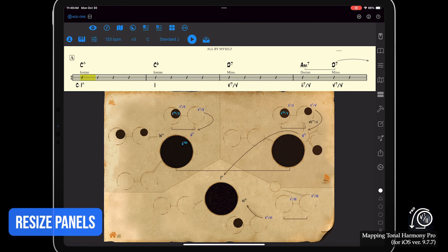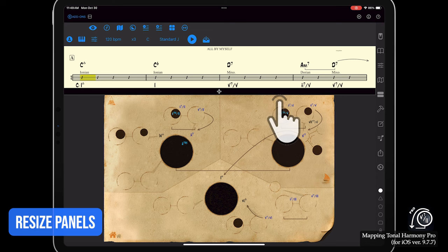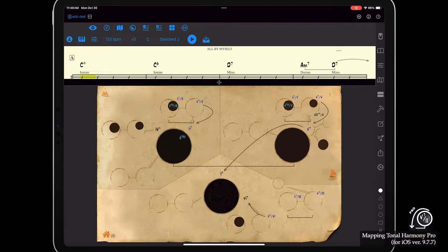If you want to resize the maps panel, just tap once on the dividing line between the map and the score, and a thick bar will appear. Now you can drag it up or down to resize the panels.